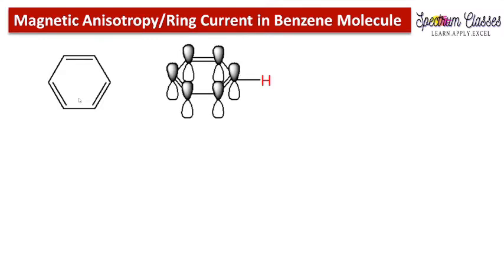Here is the benzene molecule. When we draw the orbital structure of benzene, we have a situation like this — since there are three pi bonds, and these pi bonds are formed by the sideways overlapping of the p orbitals. Since these pi bonds in the benzene ring are delocalized, we have an overall electron cloud above and below the plane of the benzene ring, which forms the ring current cloud.